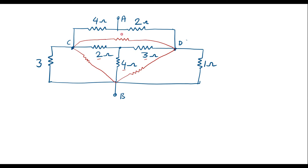Let me call these as R1, R2, and R3. So 2, 3, and 4 ohm are connected in star, and R1, R2, R3 are connected in delta. Now we will try to find R1, R2, R3 with the help of 2, 3, and 4 which are connected in star.